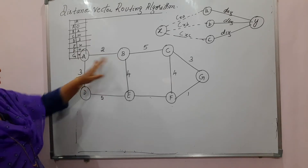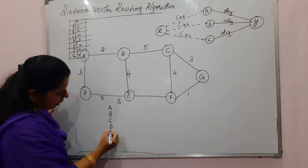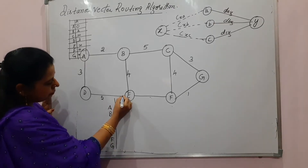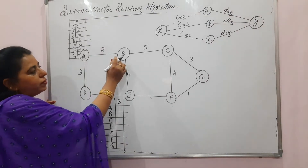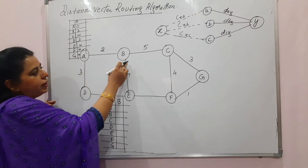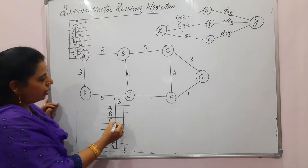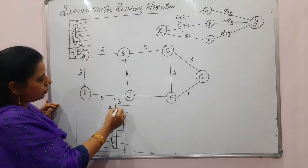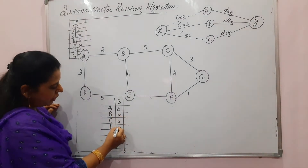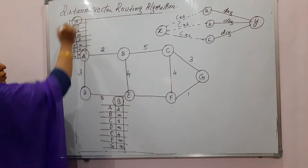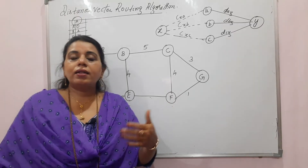Similarly, node B maintains its own distance vector. Node B's neighboring nodes are A, C, and E. So B writes: I can reach A at a cost of 2, I can reach C at a cost of 5, and I can reach E at a cost of 4. The remaining nodes (D, F, G) are indirect, so those are written as infinity. This is the initial distance vector for node B.